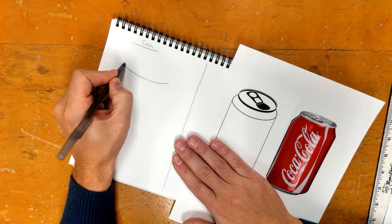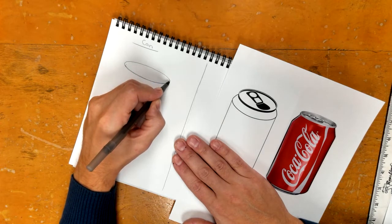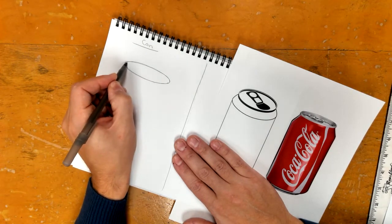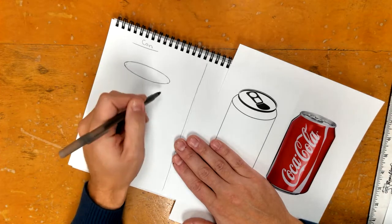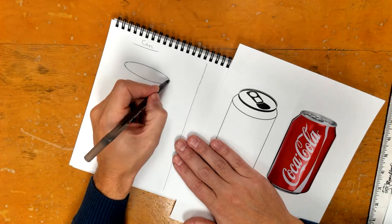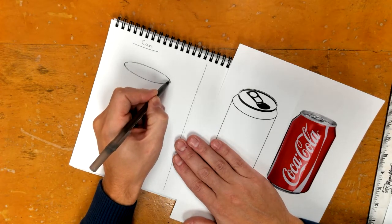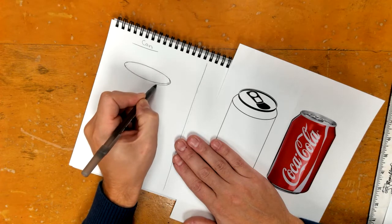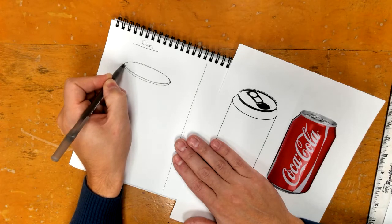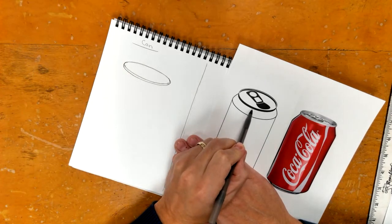And then we're going to curve up and come around. This might take some practice. Everything we're drawing here on both sides is all practice. Then I'm going to come down and add another line on the bottom. That's now this darker spot here.